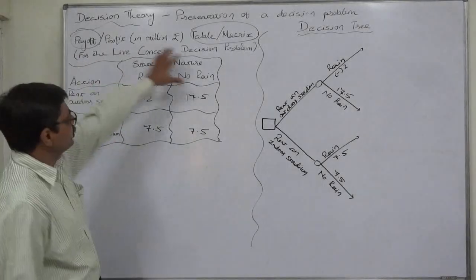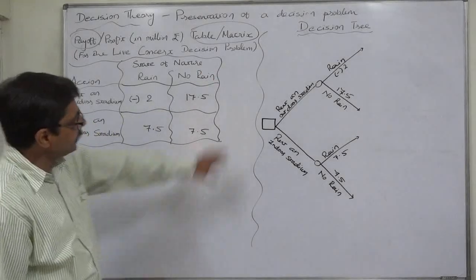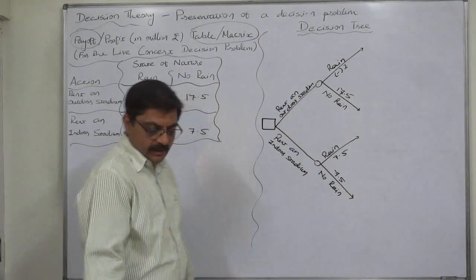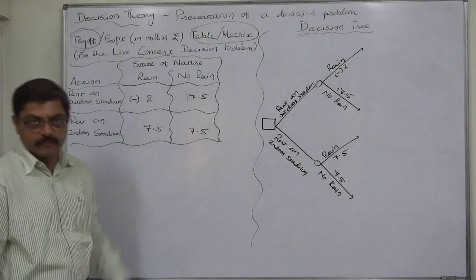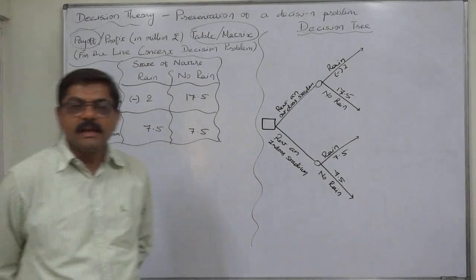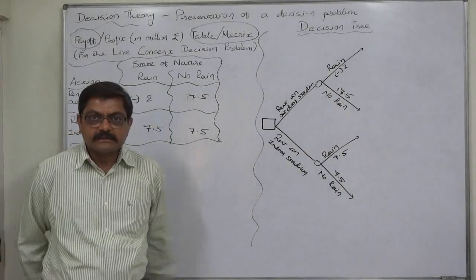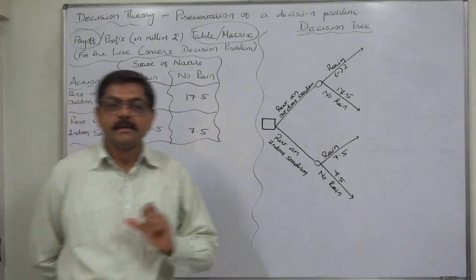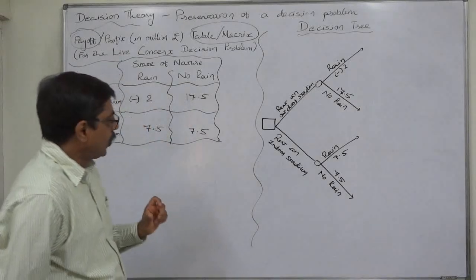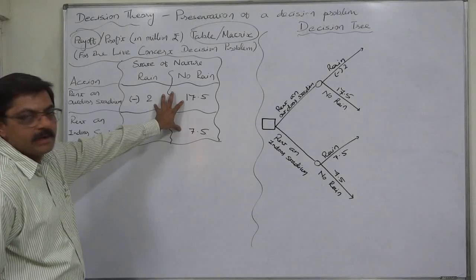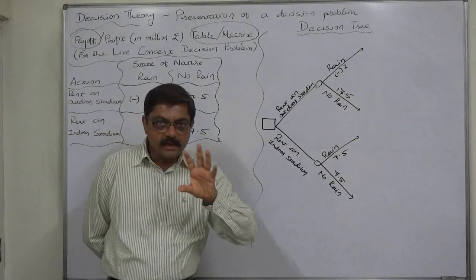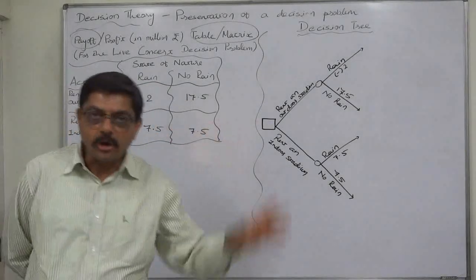One is called payoff table or payoff matrix and another is called decision tree. Let's first discuss about the payoff table or payoff matrix. Generally the payoff term is used when the outcomes of any decision problem are either profits or gains.